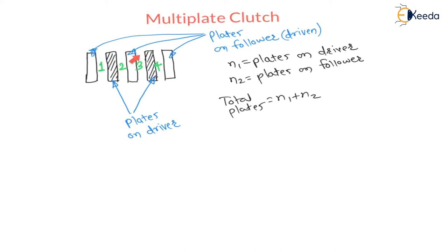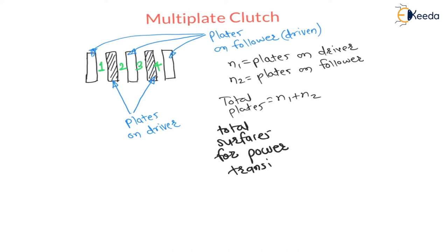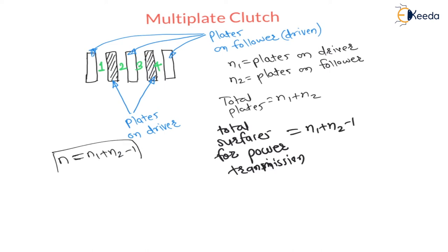Therefore, total surfaces for power transmission — we can say N — is equal to N1 plus N2 minus 1. This is very important. The number of plates responsible for power transmission is N = N1 + N2 − 1.